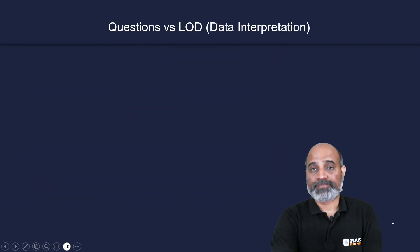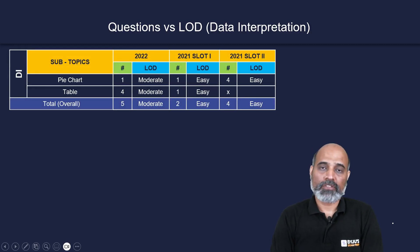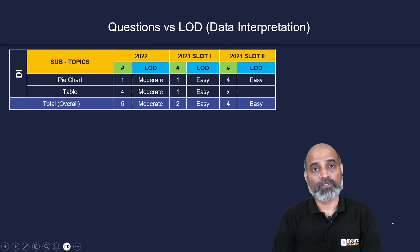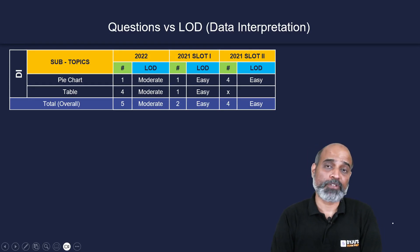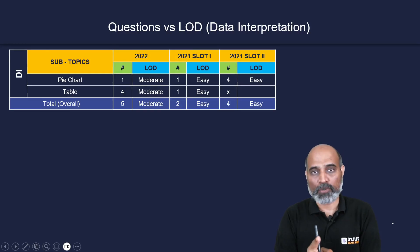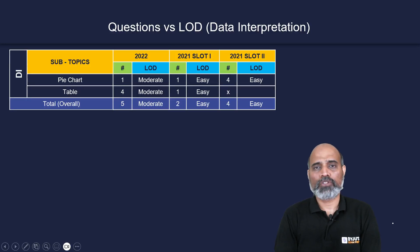Looking at data interpretation: in 2022, there were five DI questions — one from a pie chart (moderate) and four from a table (also moderate), making DI overall moderate that year. In 2021 slot one, there was just one question from a pie chart and one from a table — singletons — so they were very easy.